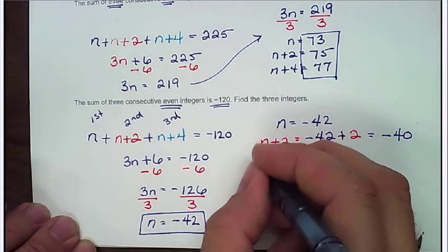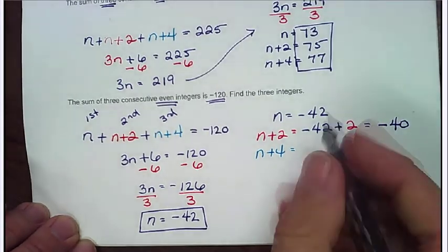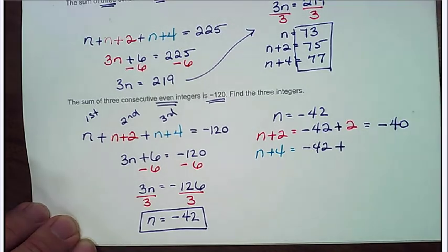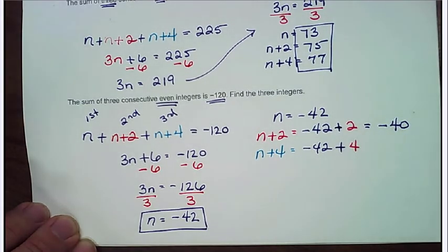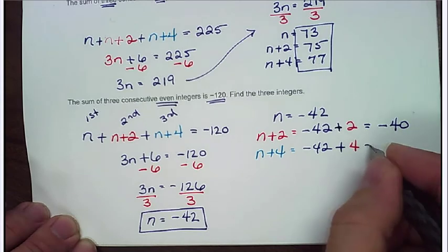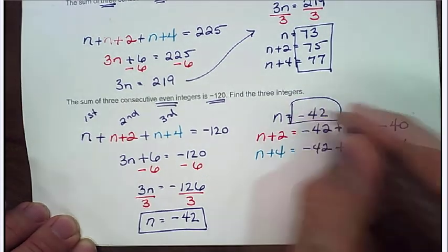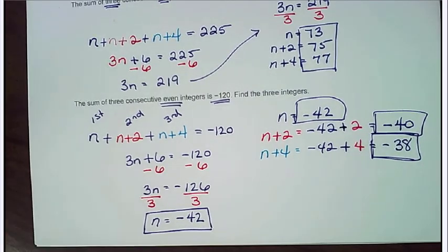So now the last one. This is going to be n plus 4. Which is going to be negative 42 plus 4. Which is going to jump me to 38 negative. So negative 38. So be careful when you're dealing with these. Always check. Make sure that they add up to give me the right number in the end. Okay. That will continue. Thank you.